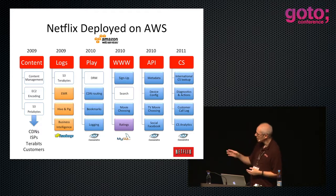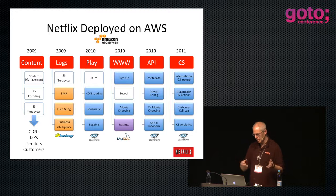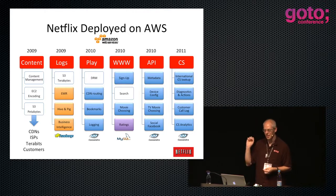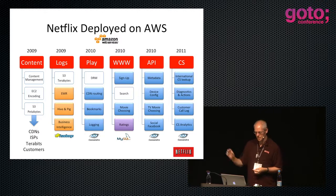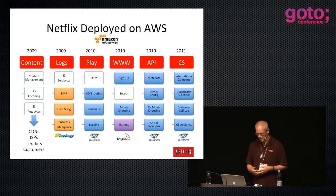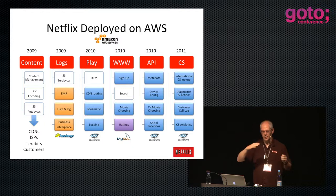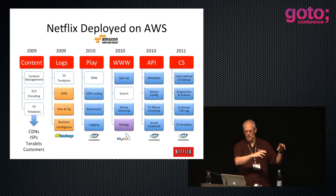Once we had everything running at volume, we had too many logs - that didn't fit in the dataset, so we moved log processing to the cloud. That's when we started using Hadoop, in 2009. Then we put the APIs that handle playback and DRM in the cloud because we were getting too much of that traffic. And then in 2010 we had this big race.